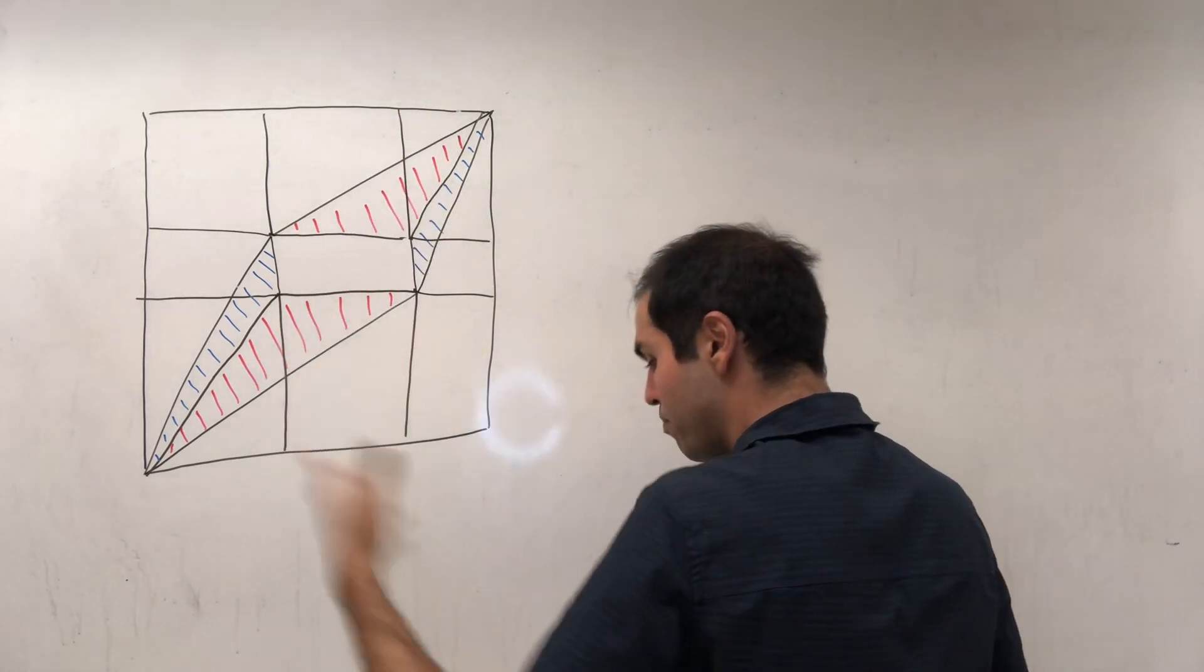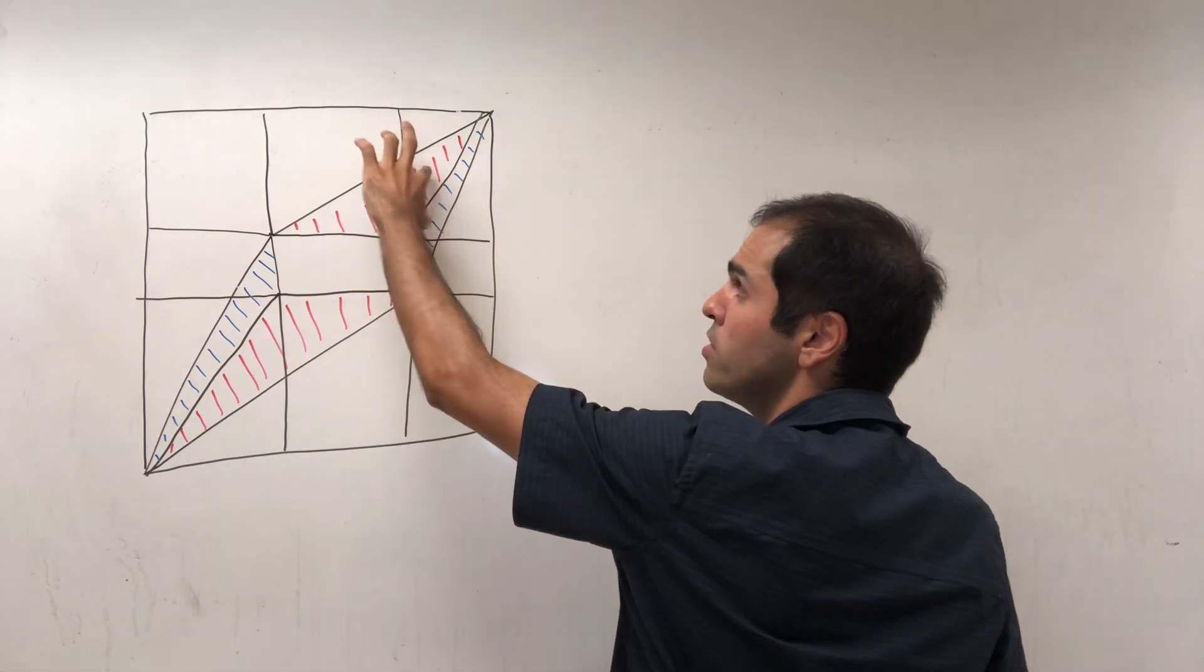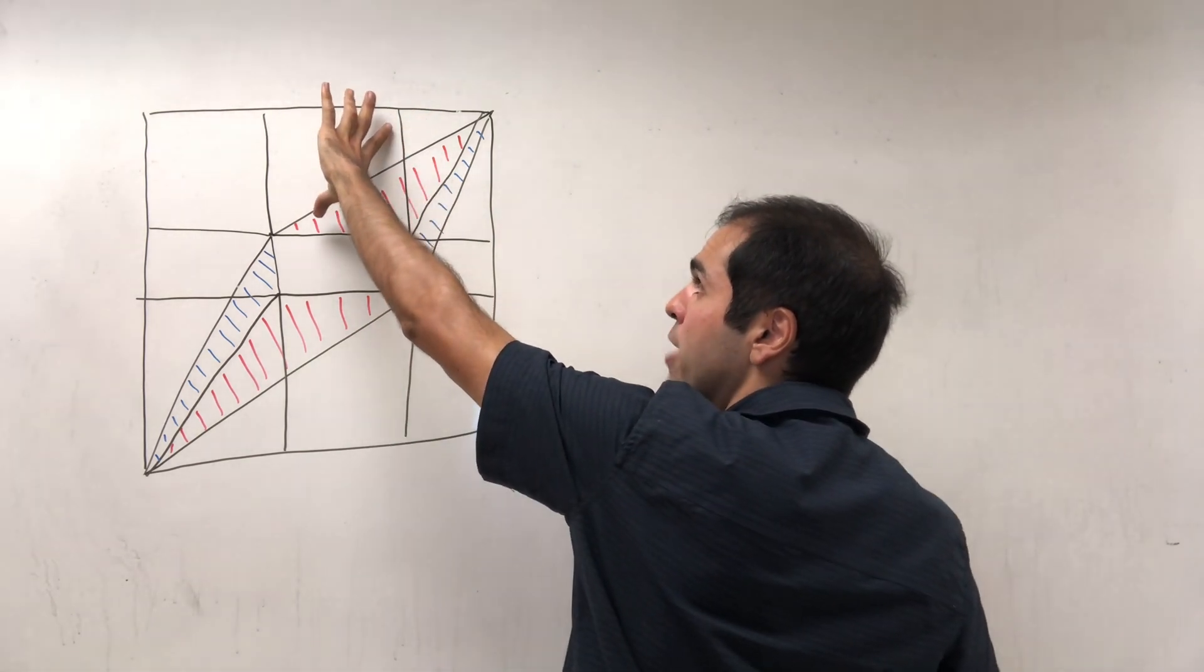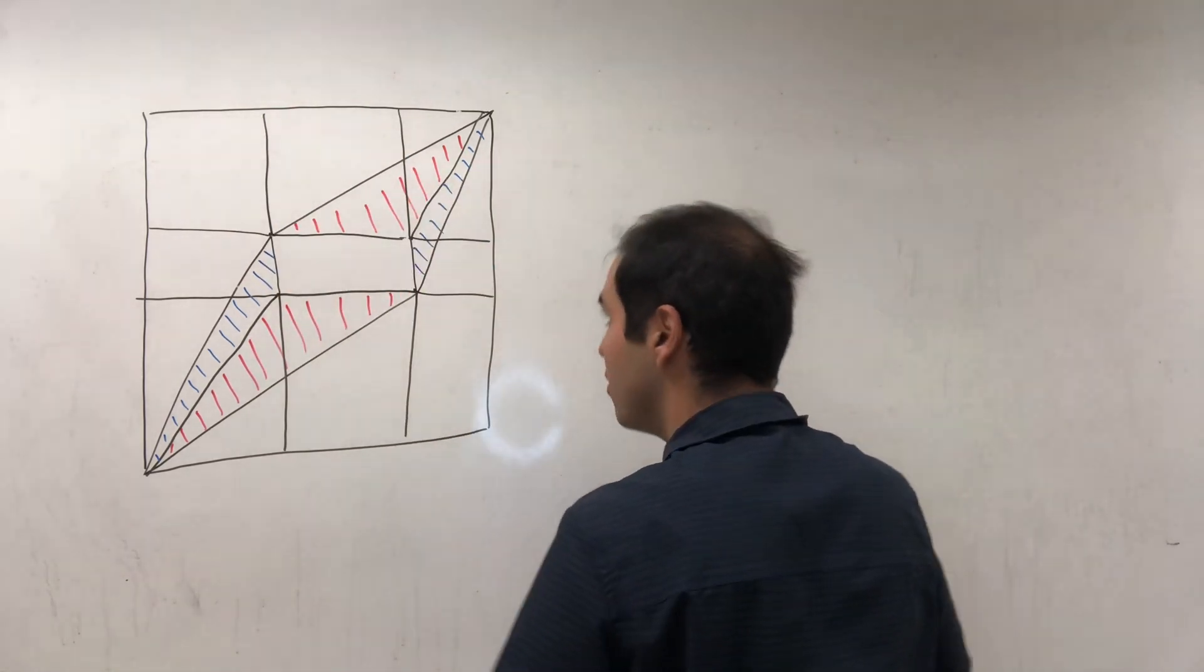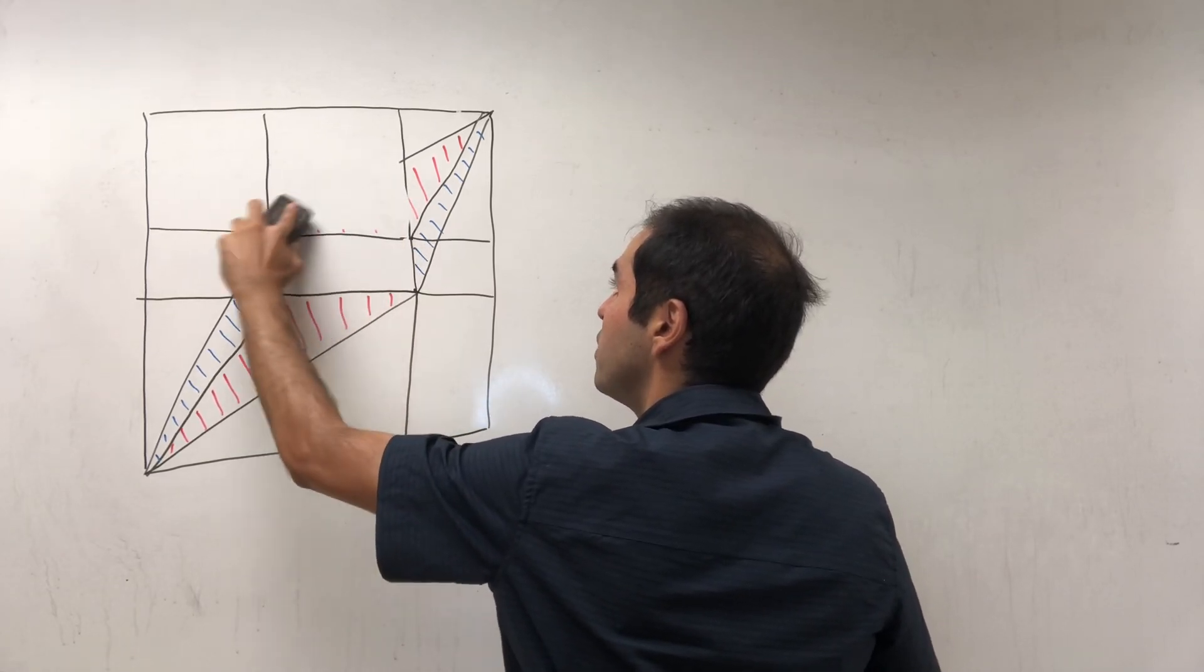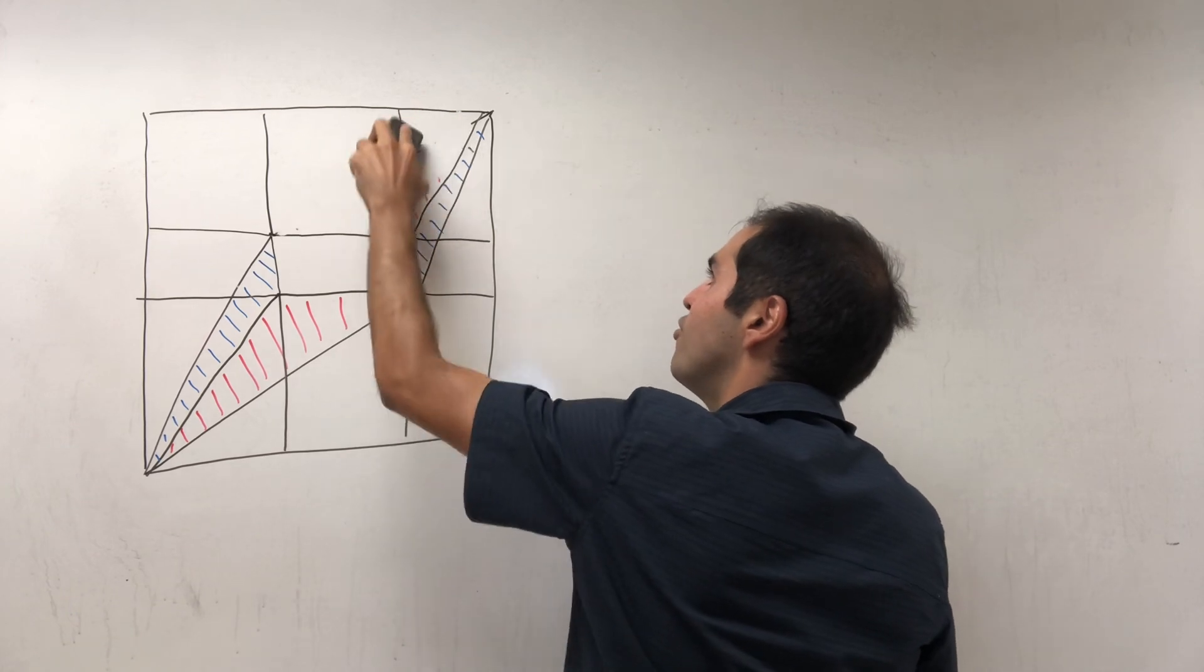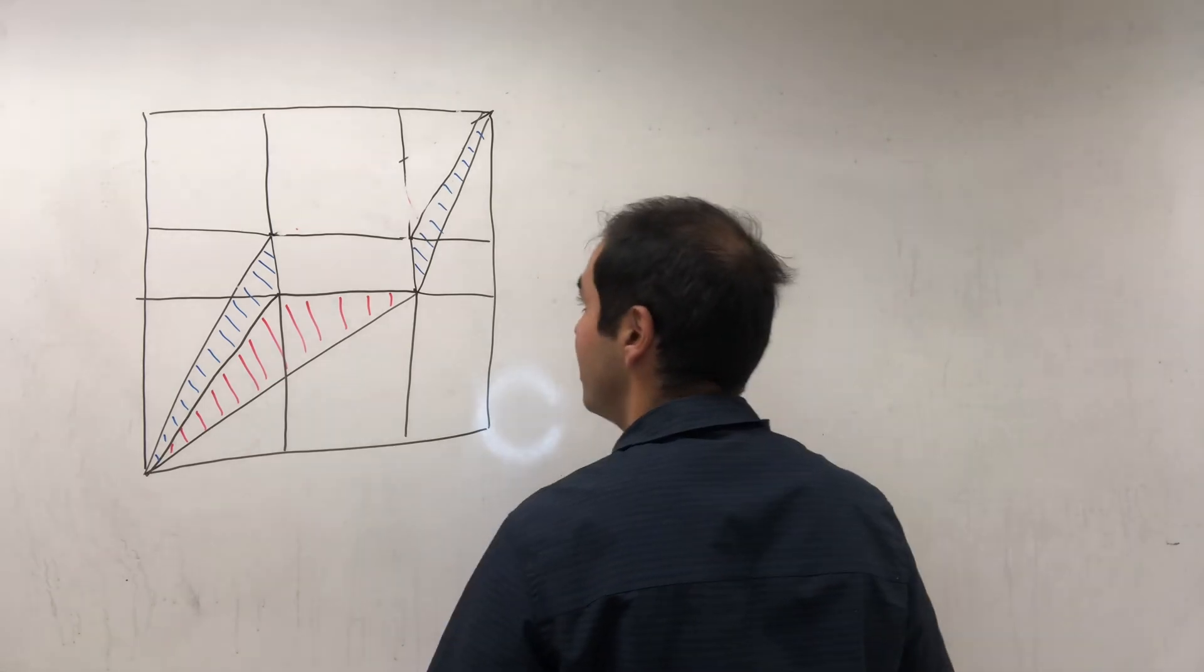So by the formula one half base times height, it turns out the area of this red triangle is actually the same as half of the area of this rectangle. So kind of like this - you can deform the triangle to actually get one half of this rectangle.